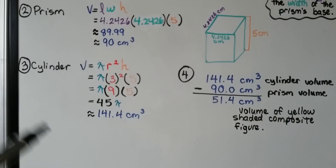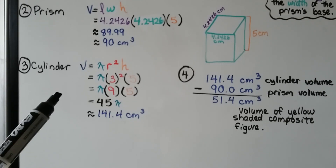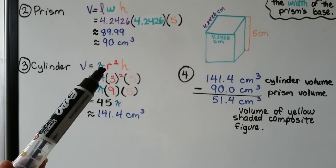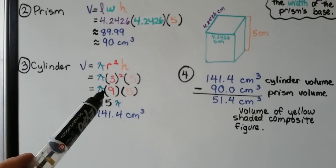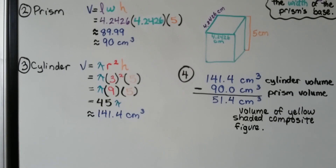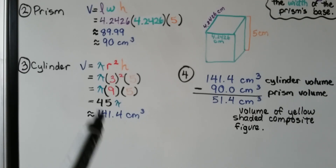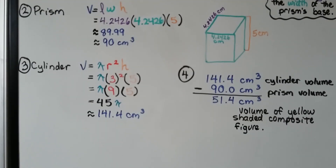Now we find the volume of the cylinder: pi times 3 squared times 5 equals 45 pi, approximately 141.4 centimeters cubed. We subtract the prism volume from the cylinder volume: 141.4 minus 90 gives approximately 51.4 centimeters cubed for the yellow shaded area of the composite figure.